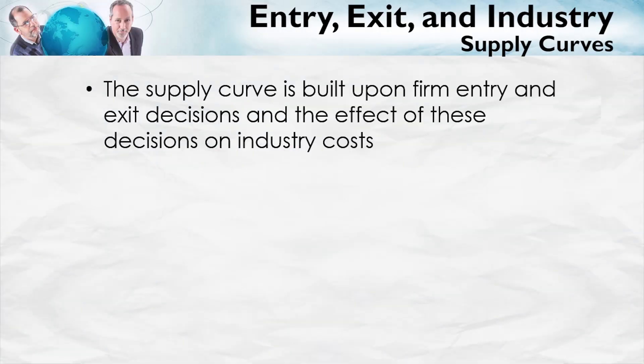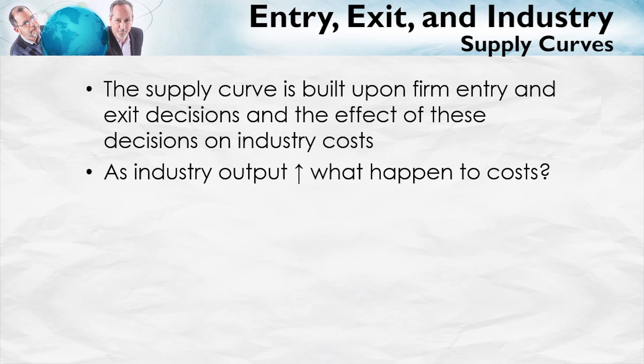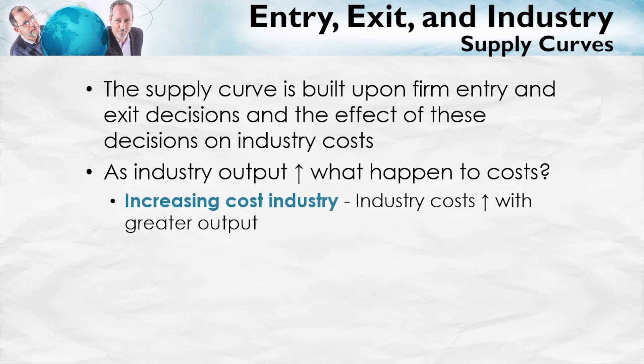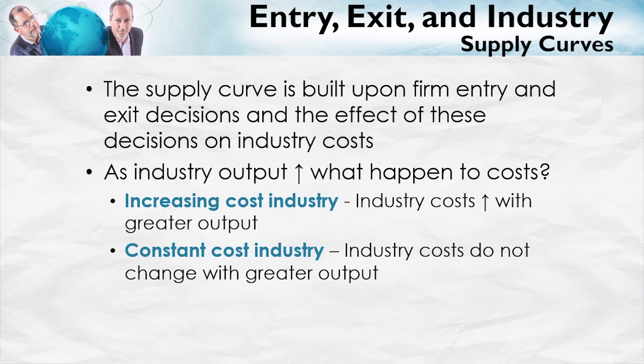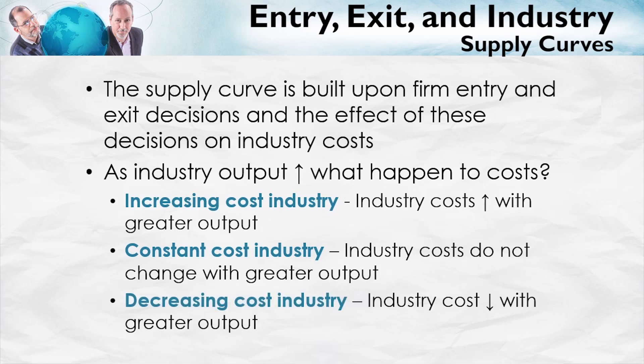The supply curve is built upon firm entry and exit decisions and the effect of these decisions on industry costs. The key question is: as industry output increases, what happens to costs? There are three possibilities. First, an increasing cost industry — industry costs increase with greater output. Second, a constant cost industry — industry costs don't change with greater or lesser output. And finally, a decreasing cost industry — industry costs fall with greater output. The first and second are quite common. The third is uncommon, but important for understanding economic geography.